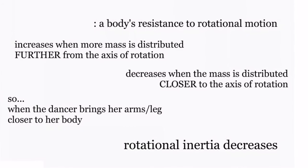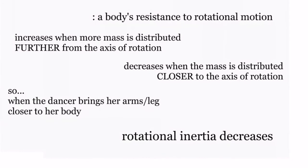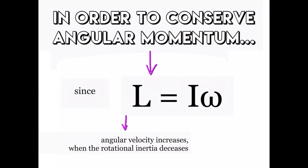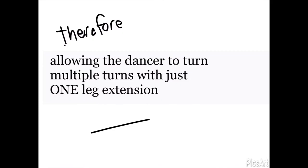When a dancer brings her arms closer to her body, the rotational inertia decreases. In order to conserve angular momentum, angular velocity has to increase, allowing the dancer to turn multiple turns with just one leg extension.